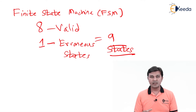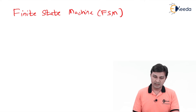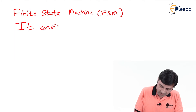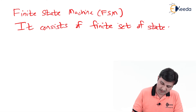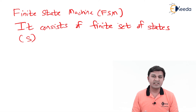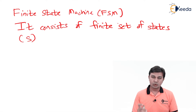Let's jump to the definition of the finite state machine. A finite state machine consists of a finite set of states, referred to as S. We already saw there are going to be a finite number of states, and that is exactly what we encounter in the definition.